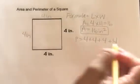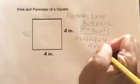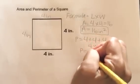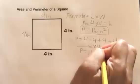Or a faster thing to do is just to do 4 times 4, which is 16. So the perimeter is 16.